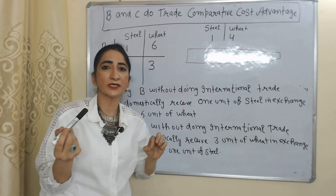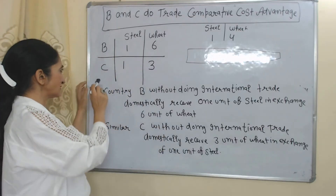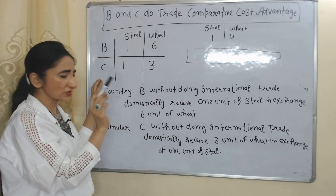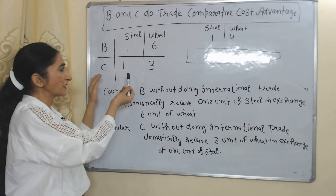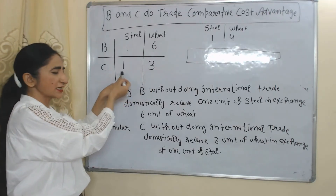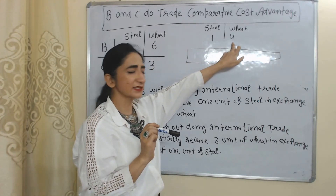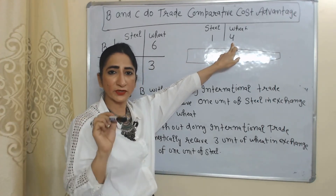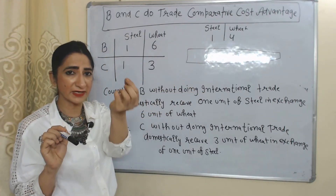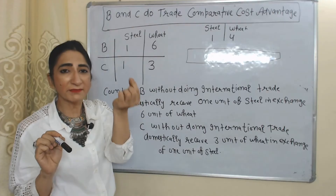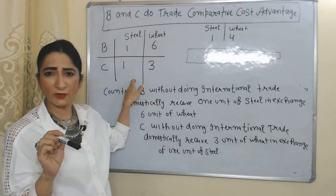Similarly, domestically without international trade, country C is receiving three units of wheat in exchange for one unit of steel. But at the international level, country C is receiving four units of wheat in exchange for one unit of steel. So country C has a benefit of one unit of wheat, and this benefit of one unit of wheat is called the gain of country C from international trade.